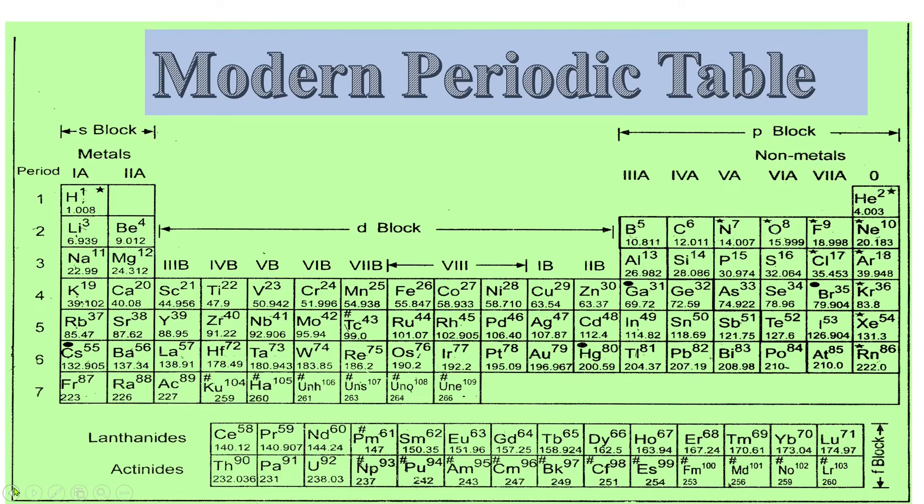And we can see this in periodic table. Look at this. This lanthanides represents the element having atomic number 58 to 71. There is a series of 14 elements. And these are called lanthanides.